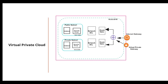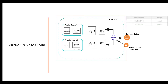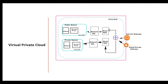The internet gateway allows resources in your public subnet to access the internet, and allows internet access to those resources. A subnet is deemed public if it has a route table that directs traffic to the internet gateway. By default, the route table created with a VPC allows communication between all instances within the VPC, but you need to explicitly define a route for traffic to the internet via the internet gateway.